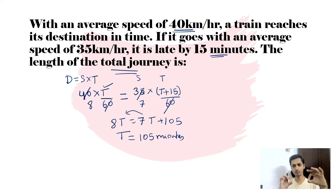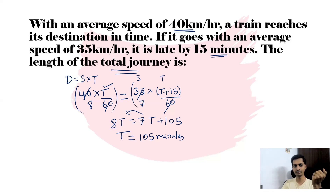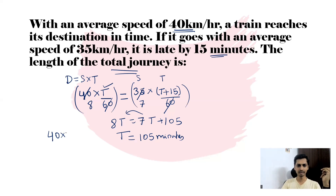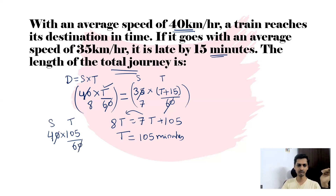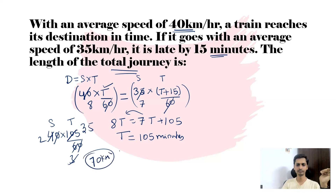Now substitute t = 105 minutes to find the total distance. Using the left-hand side: distance = 40 × (105/60). Cancel the zeros: it becomes 40 × 105/60 = 2 × 35 = 70. So the length of the journey is 70 kilometers. That completes the formulaic method.